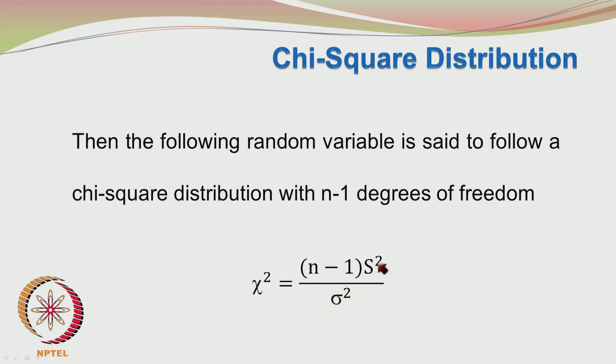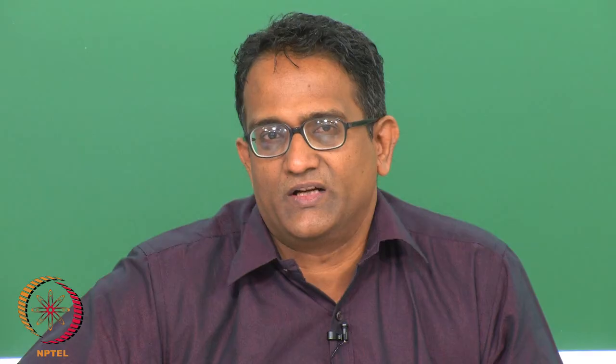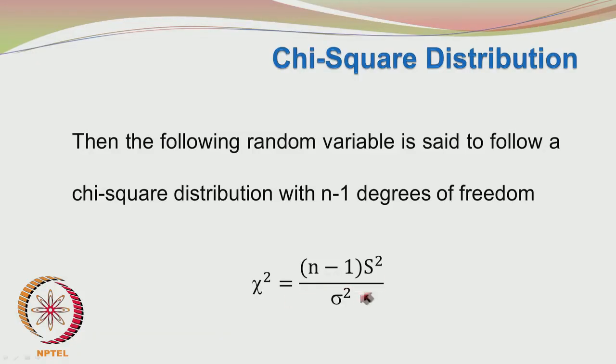Sigma squared we do not know; S square we know once we have drawn the sample. And n−1 is the sample size minus 1 — it represents the degrees of freedom, and it was used in the computation of S square. Recall that the sample variance S square equals Σ(Xi − X-bar)² / (n−1). We may think of (n−1)S² as the sum of the squared deviations of the sample elements from the mean, and the chi-square variable is (n−1)S² / σ², which depends upon the degrees of freedom.